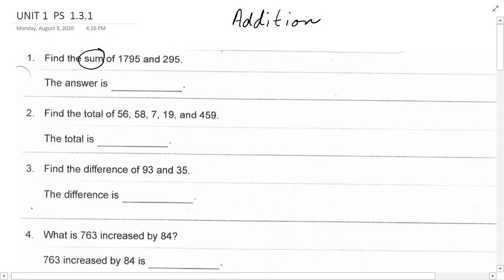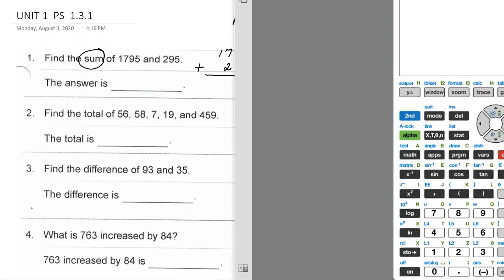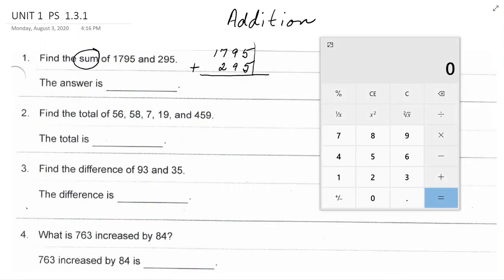Without a calculator, I would take 1,795 and I would take 295, I would line them up on the right and I would add them. In this particular lesson, I'm going to use a calculator. So, let me pull it where you can see it.